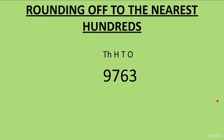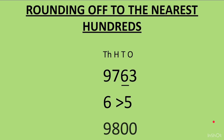Rounding off to the nearest hundreds: take the example 9763. To round to the hundreds, we look at the digit at the tens place, which is 6. Comparing 6 with 5 — since 6 is greater than 5, we change the 7 at hundreds place to 8, and all digits to the right (6 and 3) become 0. So 9763 rounds off to 9800.